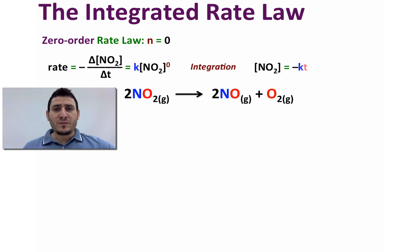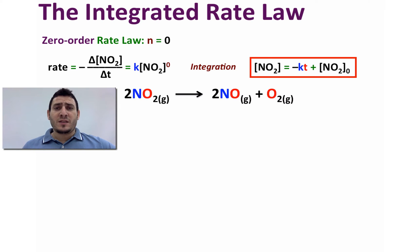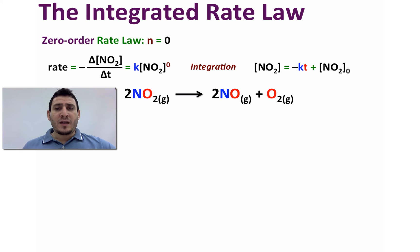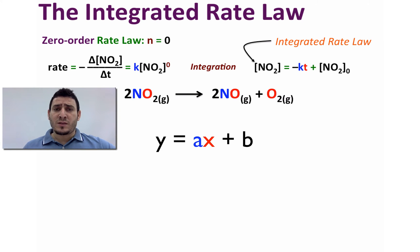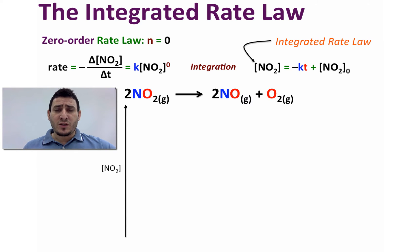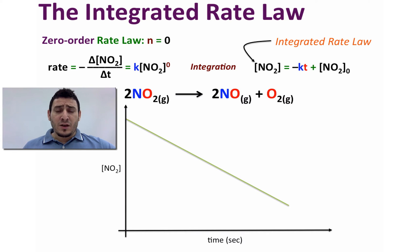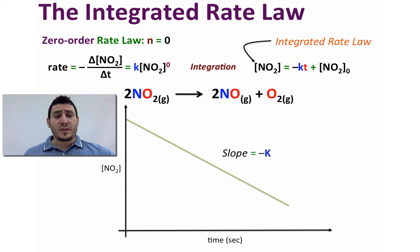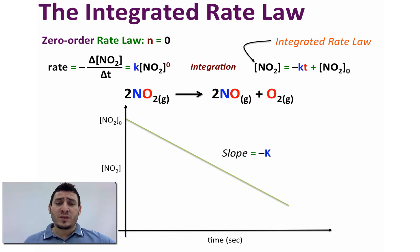The integration of this rate law gives us: the concentration of NO2 is equal to minus kt plus the initial concentration of NO2 at time t0. This is called the integrated rate law. This equation is in the form y = ax + b, so if we draw the curve of concentration versus time, we get a straight descending line where the slope equals minus k and the y-intercept gives the initial concentration of NO2.